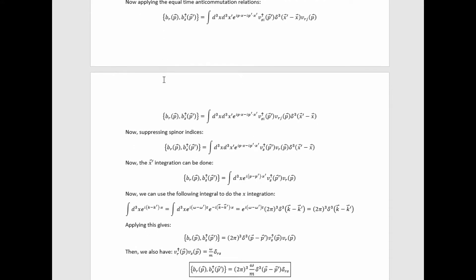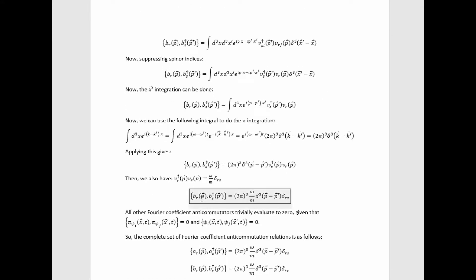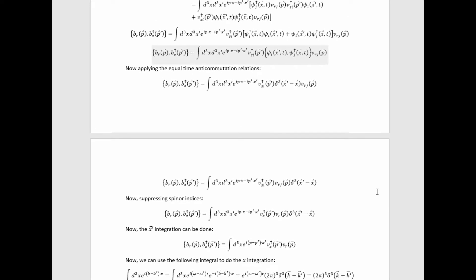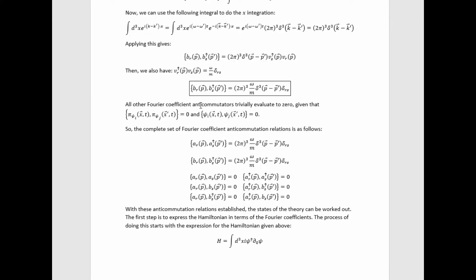A similar calculation proceeds in basically the same way to compute the anticommutator of b with b-dagger. The result is analogous. All other Fourier coefficient anticommutators trivially evaluate to zero given these two anticommutation relations. So the complete set of Fourier coefficient anticommutation relations ends up being this set of eight.